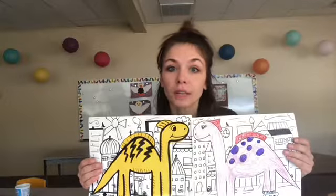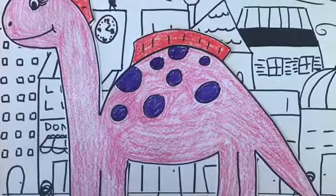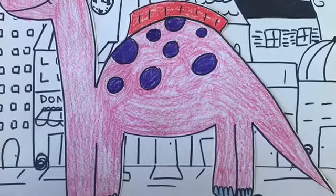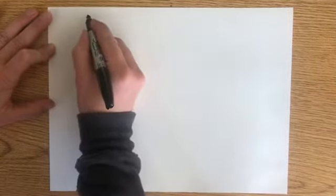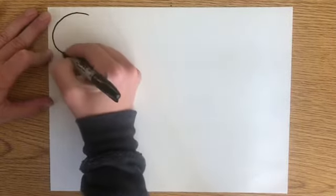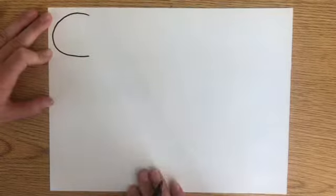To draw your dinosaur today, you'll be following my directed line drawing. Turn your paper horizontally in front of you. Start in the top corner with a nice letter C.